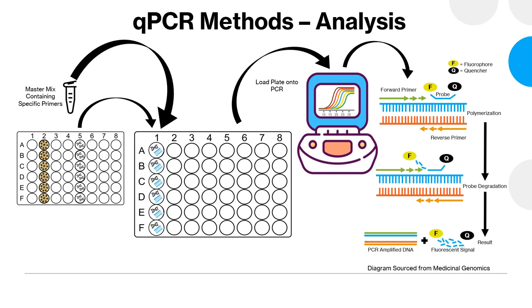The supernatant that doesn't stick to those cells is removed, and then the DNA is rinsed with ethanol to remove any extra particulate. Once the DNA has been fully isolated, an elution buffer is added, the DNA detaches from the binding buffer, and it can be transferred to a new well with only that purified DNA present. Once purified and isolated, qPCR analysis can be performed. A master mix is created that contains primers specific to the analytes of interest — in this instance, a primer for total yeast and mold and a primer for cannabis DNA.